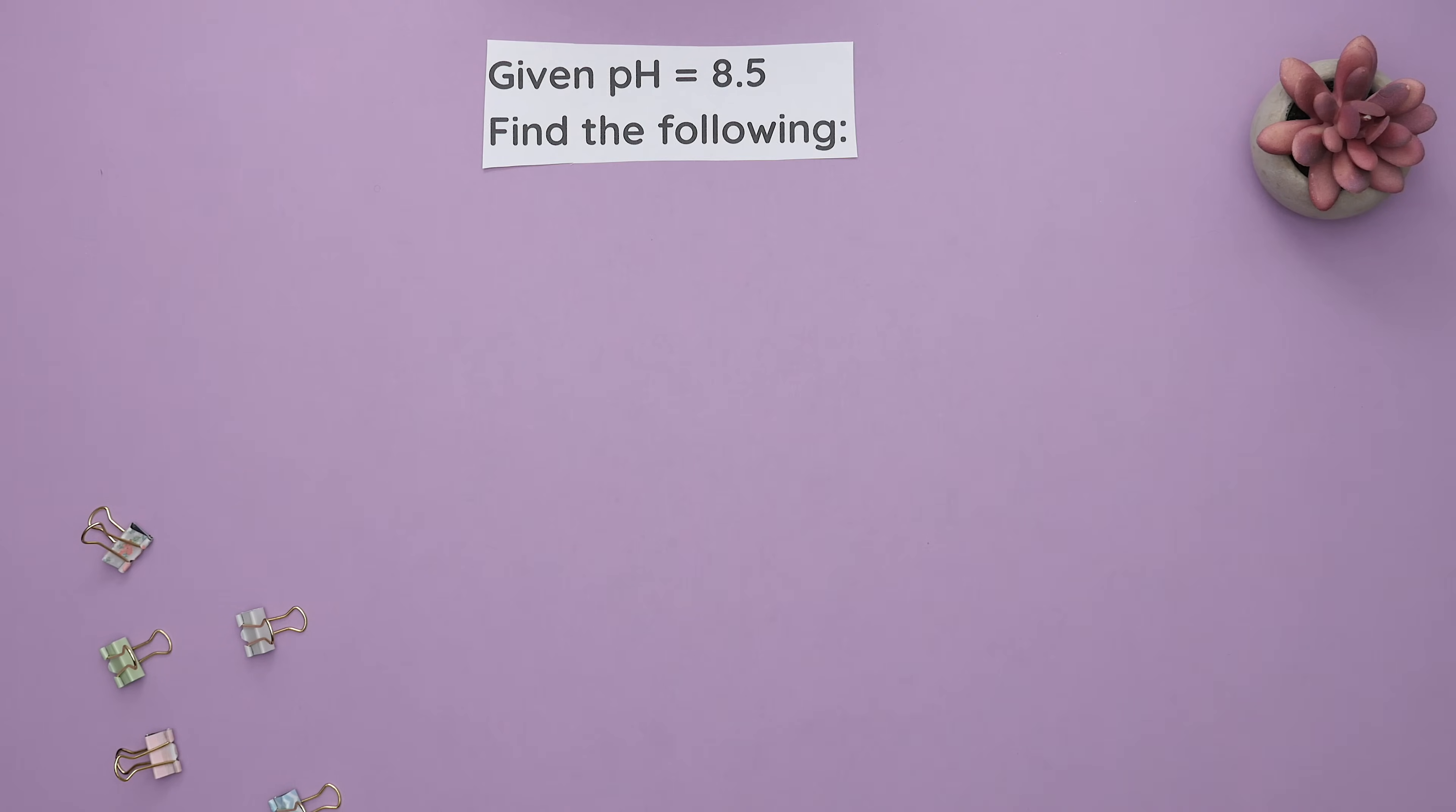In question two, we are given the pH and asked to find our acid and base concentrations and the pOH. Starting with part A, since we are given the pH, we can use this formula and solve for the acid concentration.